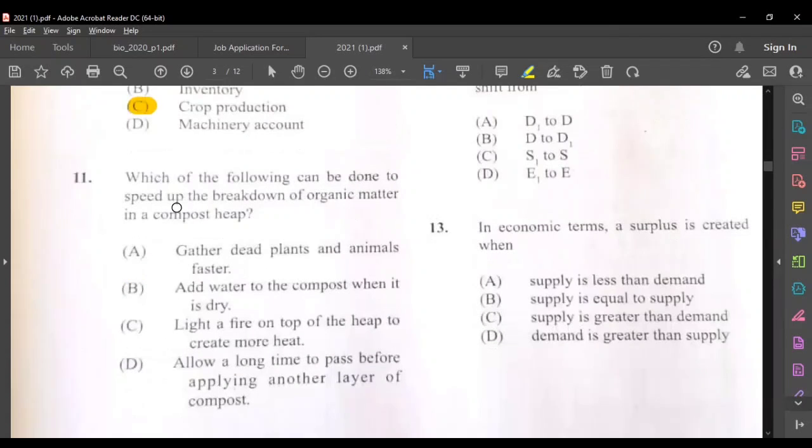Which of the following can be done to speed up the breakdown of organic matter in a compost heap? Gather dead plants and animals faster. Add water to the compost when it is dry. That will speed it up. Light a fire on top of the heap to create more heat, the fire might destroy microorganisms or kill them. Allow a long time to pass. So the possible answer for this would be B, add water to the compost when it is dry.